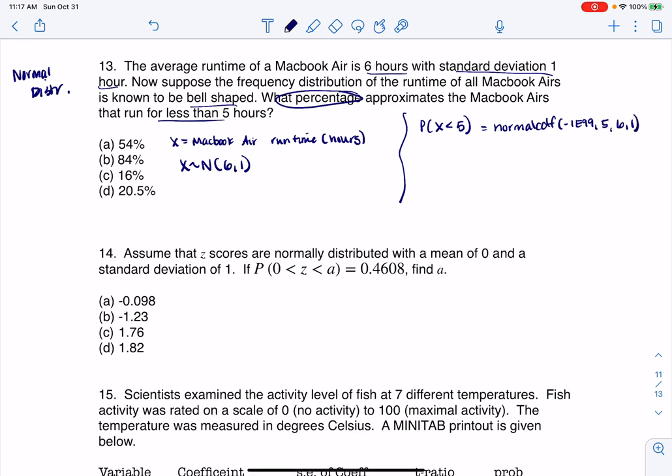Now just for fun, I always like to draw the graph of these things. So if I think about this graph, there would be a six under here, and here's five, which also happens to be exactly one standard deviation below the mean, and I want this area.